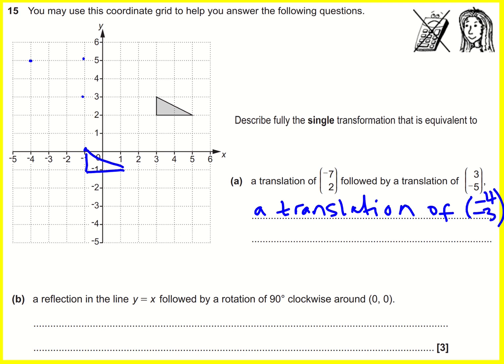And actually, that's what would happen if I added these two vectors together. If I did minus seven, two, plus three, minus five, that is a way of actually applying both these transformations. I would add the tops, that would give me minus four. I'd add the bottoms, that would give me minus three. So I could have done this without the grid, but I've done it with the grid here. All good.